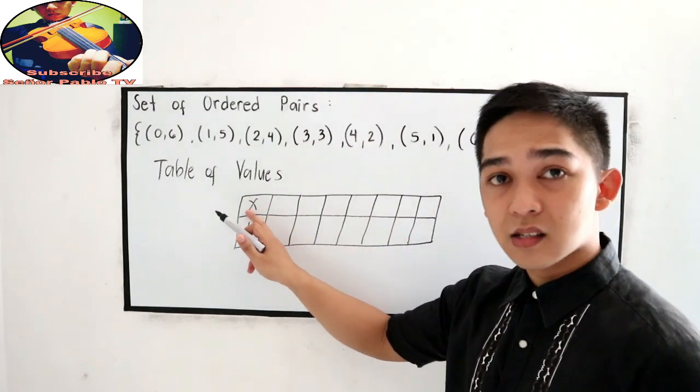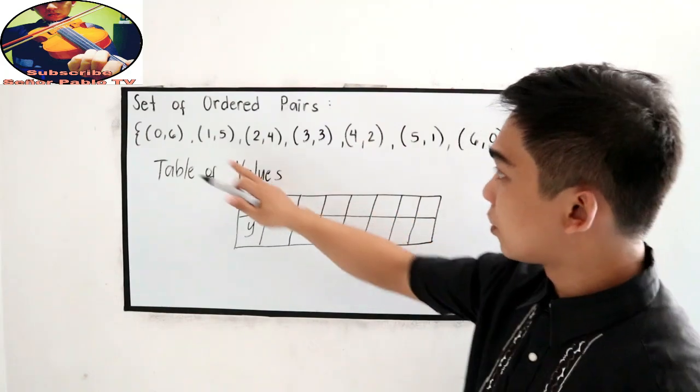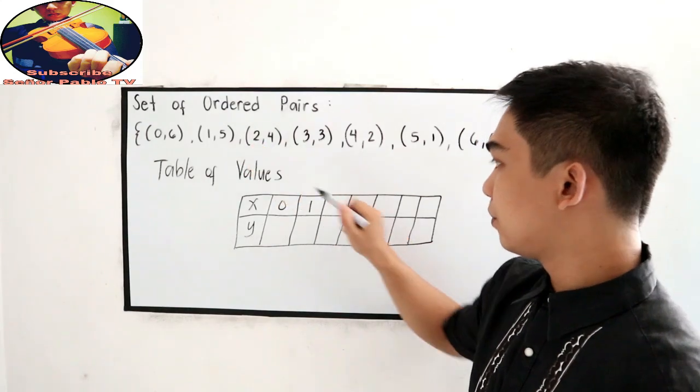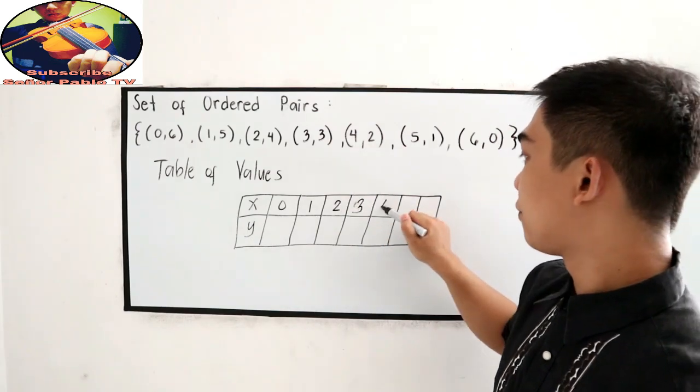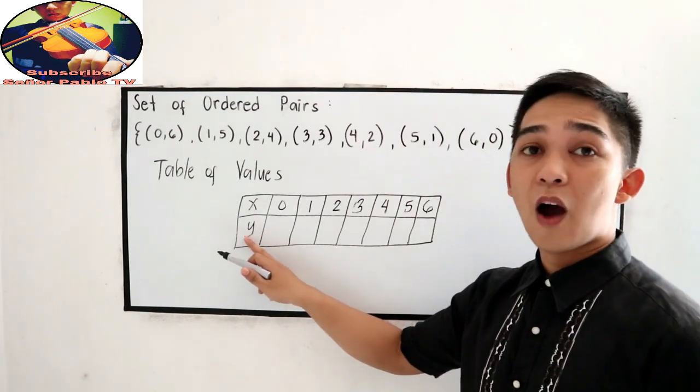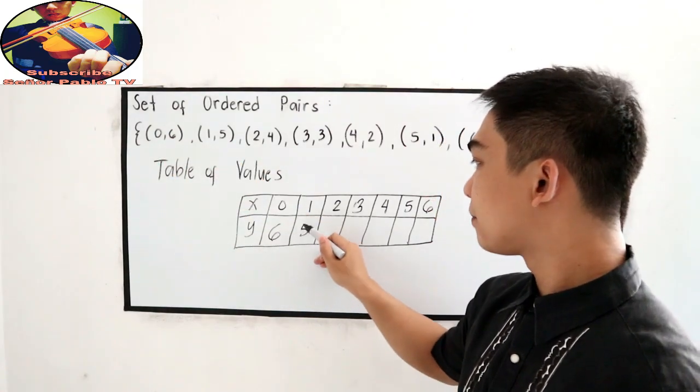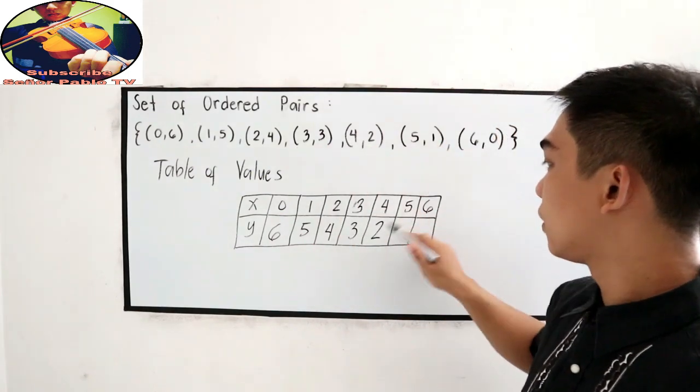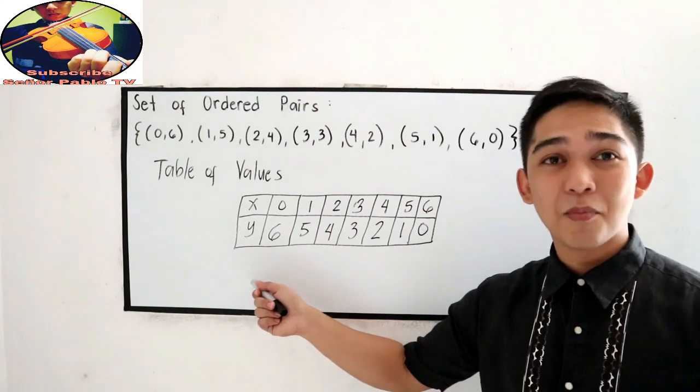Let us write all the x-coordinate under our x. So, our x are 0, 1, 2, 3, 4, 5, and 6. So, we have 6, 5, 4, 3, 2, 1, and 0. So, this is what we call the table of values.